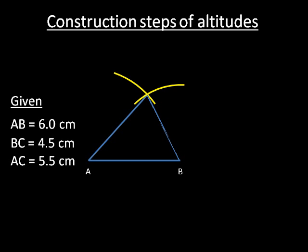We have triangle ABC. Now put the pointer of compass at point B, take a suitable radius and draw two arcs intersecting the line AC. You can see the green color arcs appearing in front of you. Now give names to the intersecting points as A1 and A2.